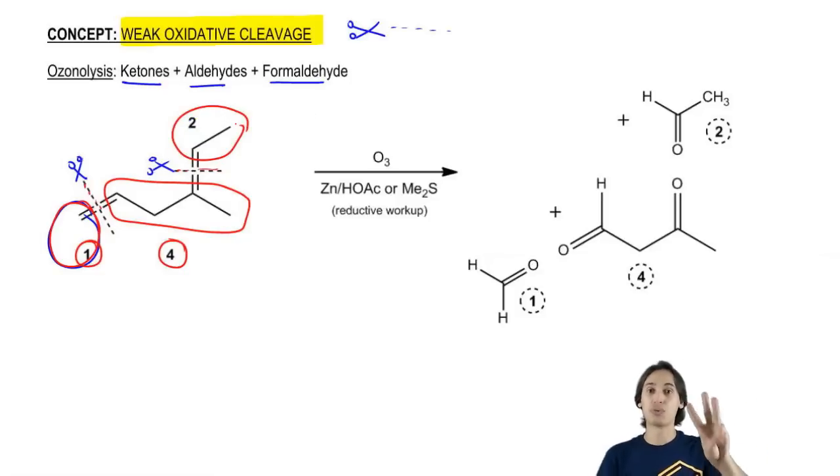And then here at the top, I've got two carbons that are getting chopped off. So what that means is that I'm going to expect three different products: a one carbon product, a four carbon product, and a two carbon product.